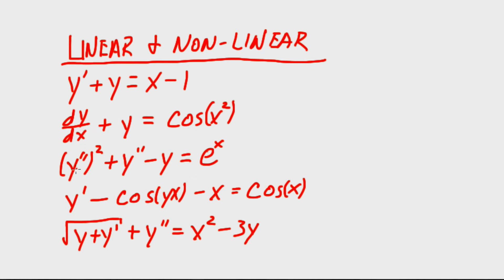The third one would be nonlinear because y-double-prime is squared, making it nonlinear. The fourth is nonlinear because the cosine function is operating on both y and x — if the y were not in there, it would be linear.